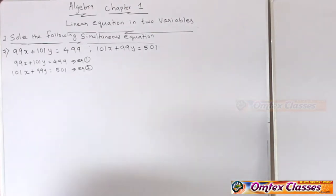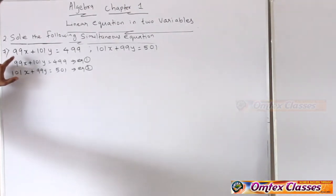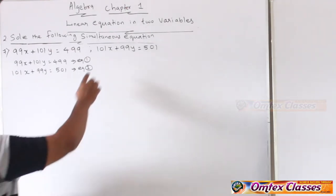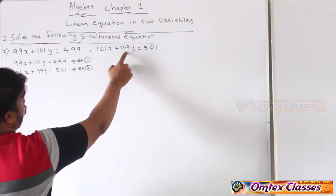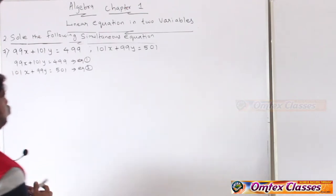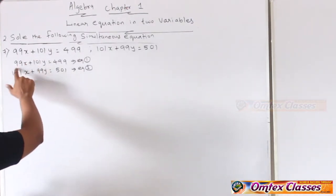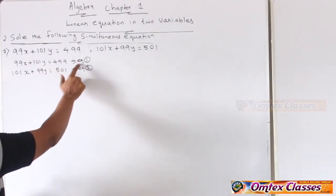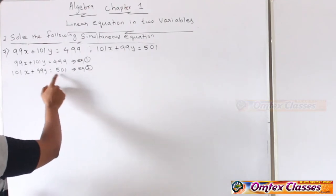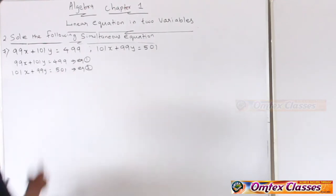Question number seven, very important sum. 99x plus 100y equal to 499 — this is equation number 1. 101x plus 99y equal to 501 — this is equation number 2.